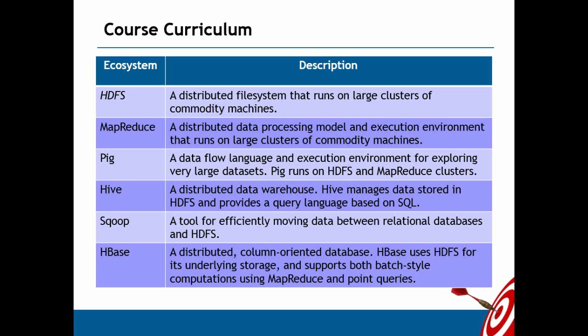Sqoop is another ecosystem installed separately. Its main purpose is bulk transfer of structured data — like database data — from traditional RDBMS to Hadoop and from Hadoop back to traditional RDBMS: import and export. Import is the process of reading table data from other databases and placing it in the Hadoop Distributed File System, or copying a table into your Hive data warehouse. It is mainly used for import and export with many additional features.